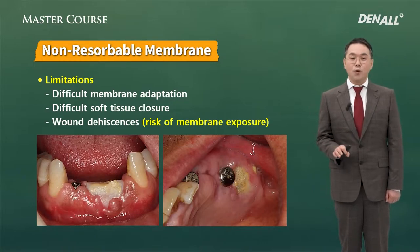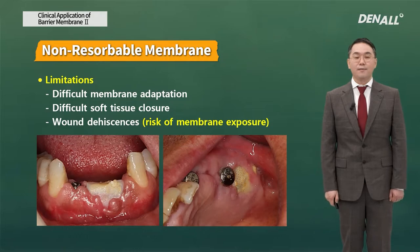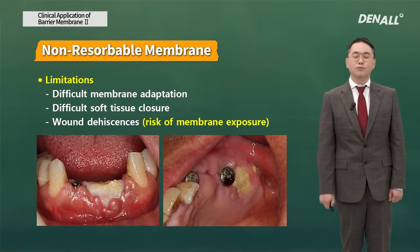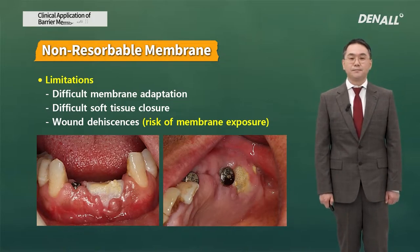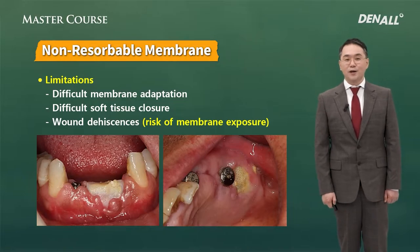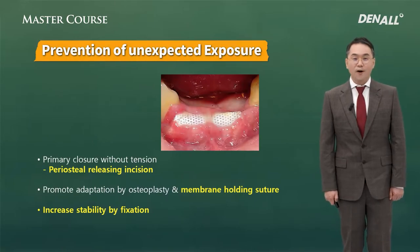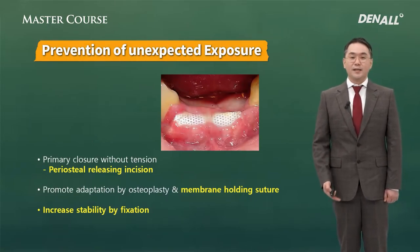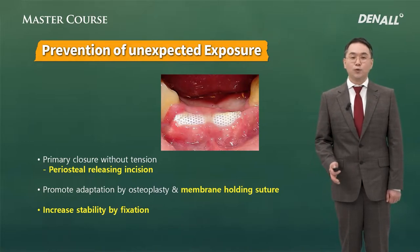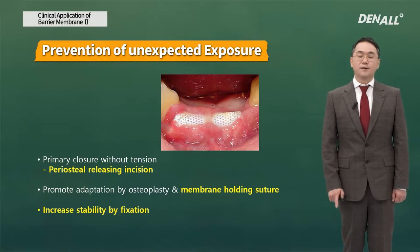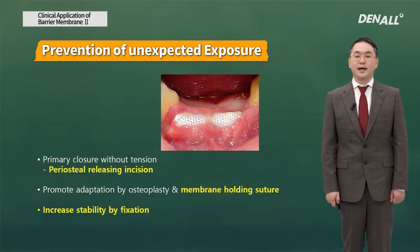If the center of the membrane — not the margin — is exposed, bacterial migration is not allowed. However, in many cases the margin can be exposed, and even with good primary closure, problems can occur later. Therefore, when you use a dPTFE membrane, unintentional and unexpected exposure should be prevented. Especially in early wound healing, it should not be exposed, and we need to consider several things for that.